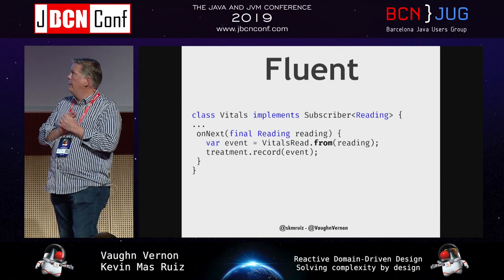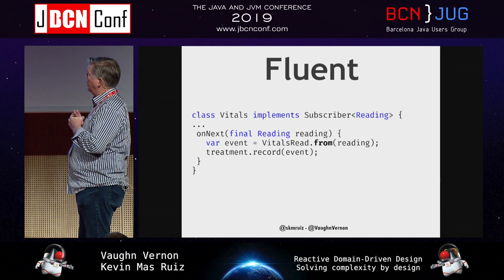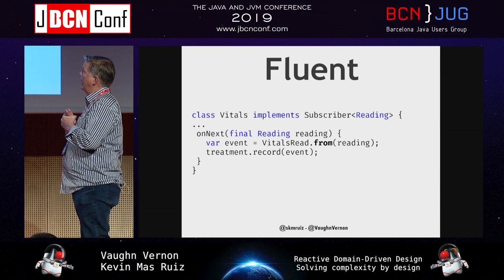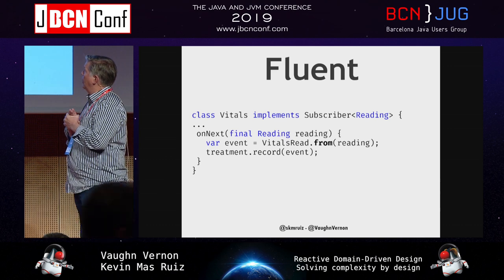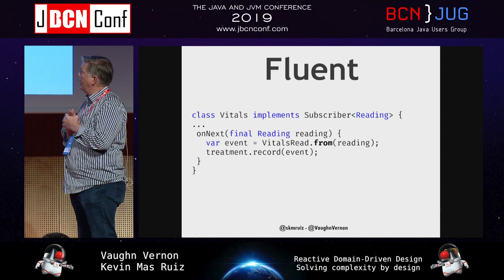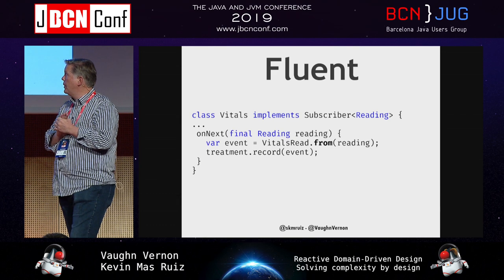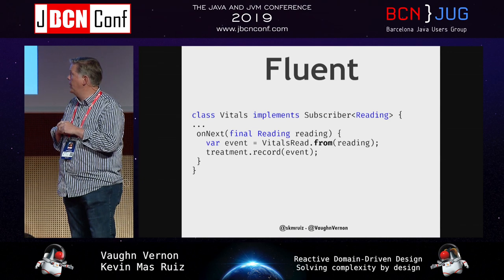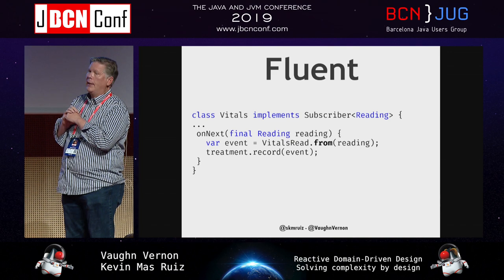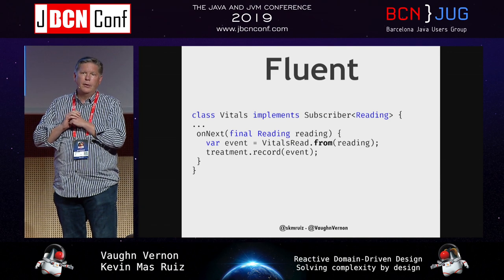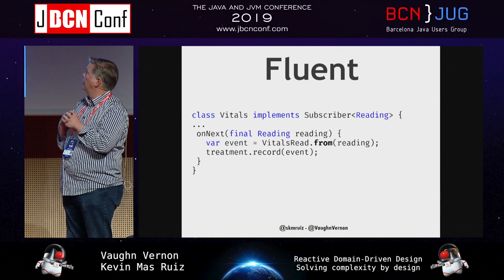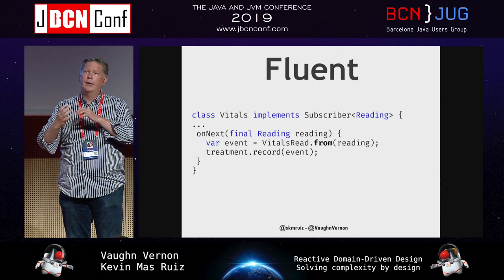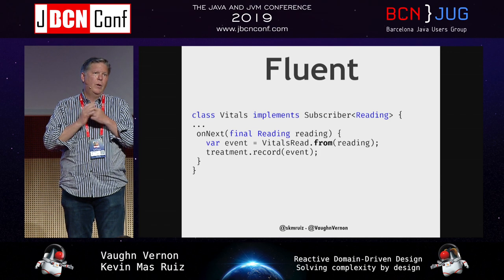Here's an example of a reactive streams interface subscribed to machine readings. This concept is called vitals. On the next reading available, we create a vitals-read event and dispatch it to the treatment to be recorded - capturing important patient information. It's fluent. You may be concerned about 'onNext,' but no one sees that from outside because it's just part of the subscriber interface. Don't worry about 'onNext' polluting your domain model - it's just a necessary interface for interacting with reactive streams.